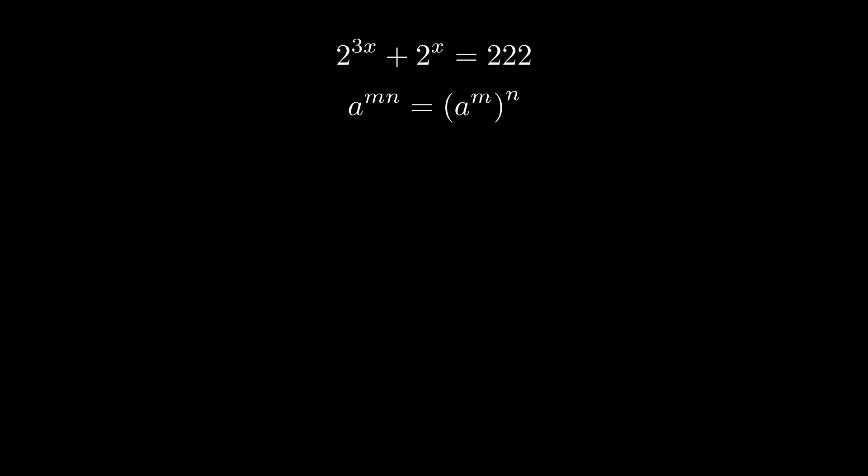Since 2 to the 3x is the same as 2 to the x cubed, we can see that there's a 2 to the x happening twice. This makes it very convenient to do a substitution. Let's just say y is 2 to the x. Then our equation becomes y cubed plus y equals 222.